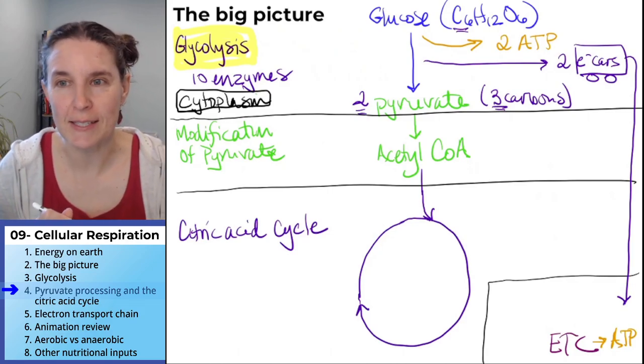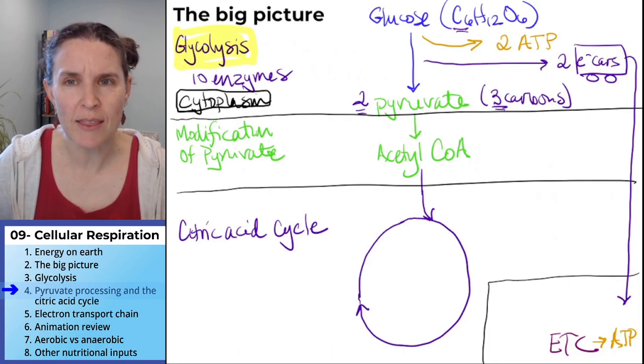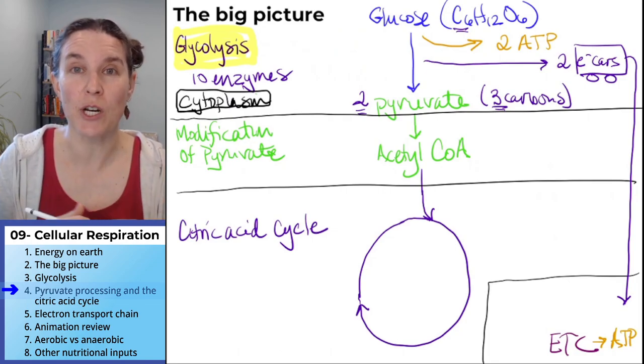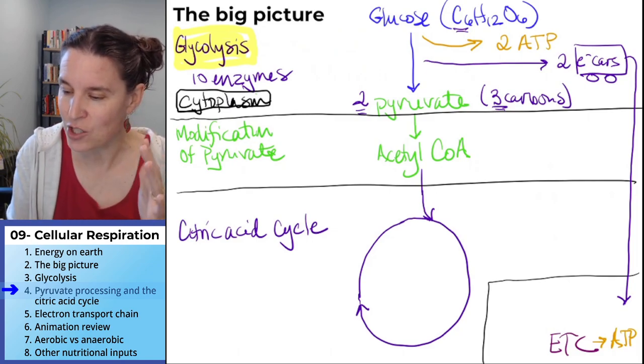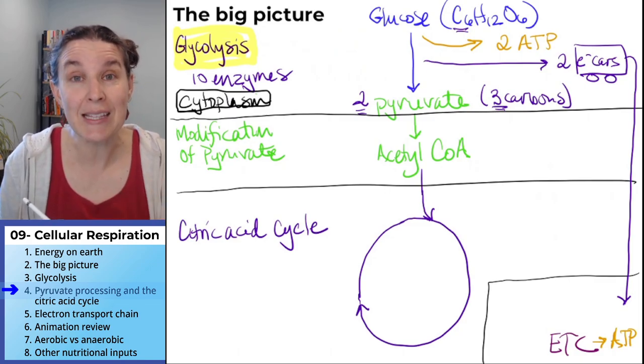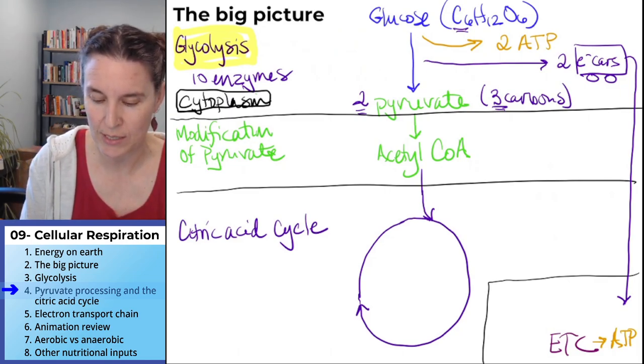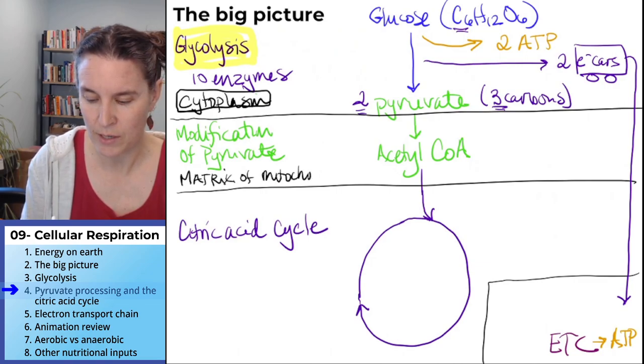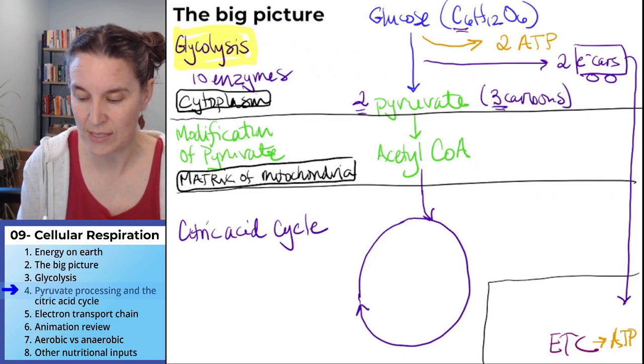Alright, a couple of things. I mentioned in the last section that parts of cellular respiration in eukaryotes take place in the mitochondria. And in fact, let's just make a note of that. Both the modification of pyruvate and the citric acid cycle both happen in the mitochondrial matrix. That's the location. That's where this is happening.